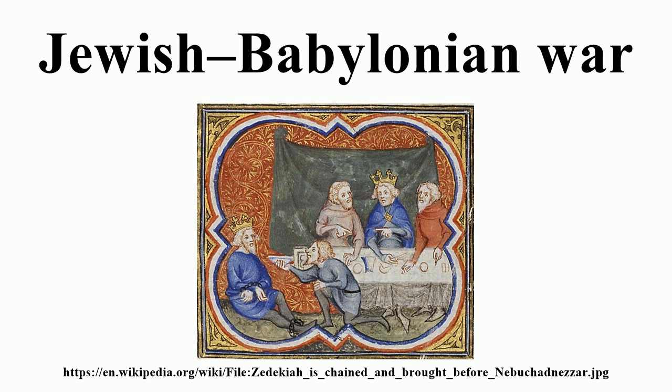The Babylonian troops managed to get inside the walls and conquer the city. Yet Zedekiah and some of his troops managed to escape to Jericho, where they fought against the Babylonians, who captured Zedekiah and his sons and brought them in chains to Babylonia, where Zedekiah's children were executed in front of him.